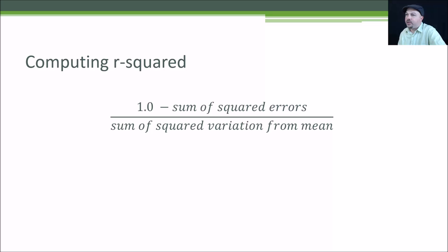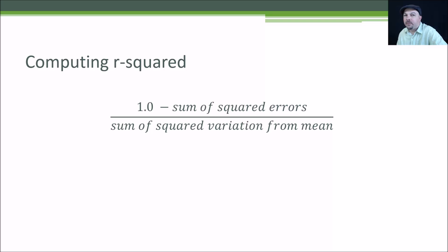To compute the value, you take 1 minus the sum of the squared errors over the sum of the squared variations from the mean. Python will give you functions that compute that for you. R squared ranges from 0 to 1. Zero means your fit is terrible—it doesn't capture any of the variance in your data. One is a perfect fit, so all the variance gets captured by this line. Zero is bad, one is good. A low R squared value means a poor fit, high R squared value means a good fit.